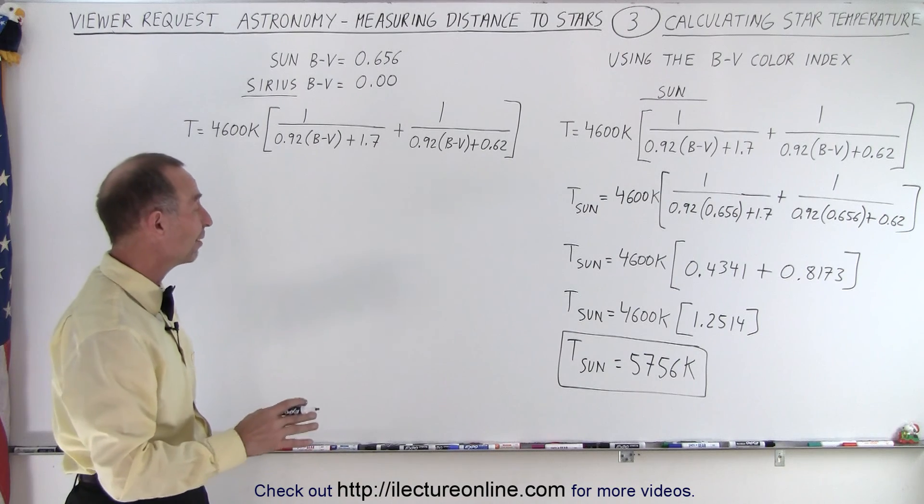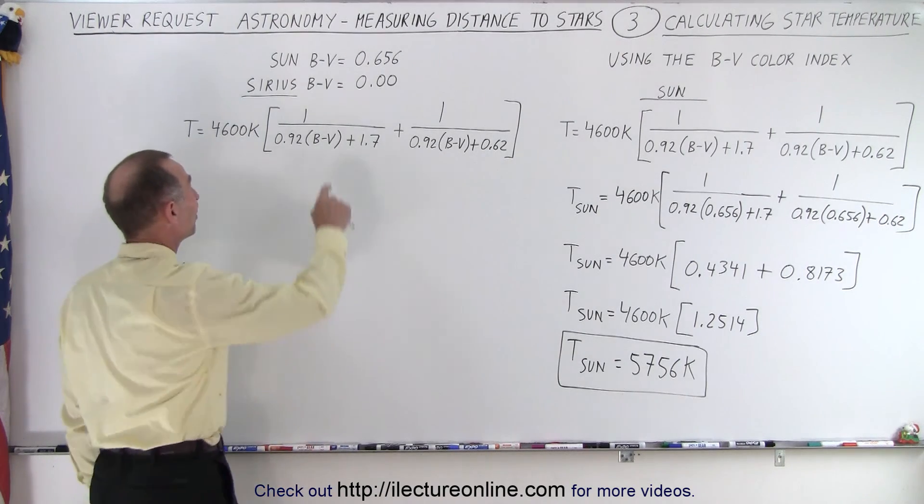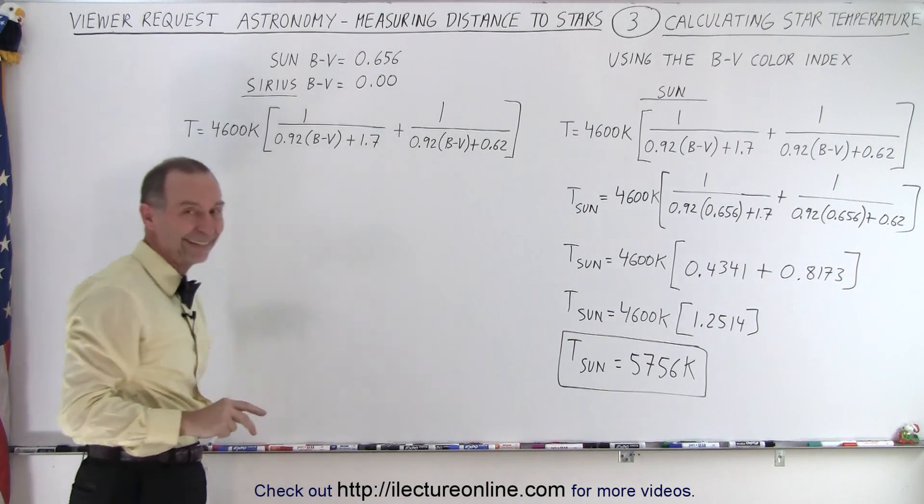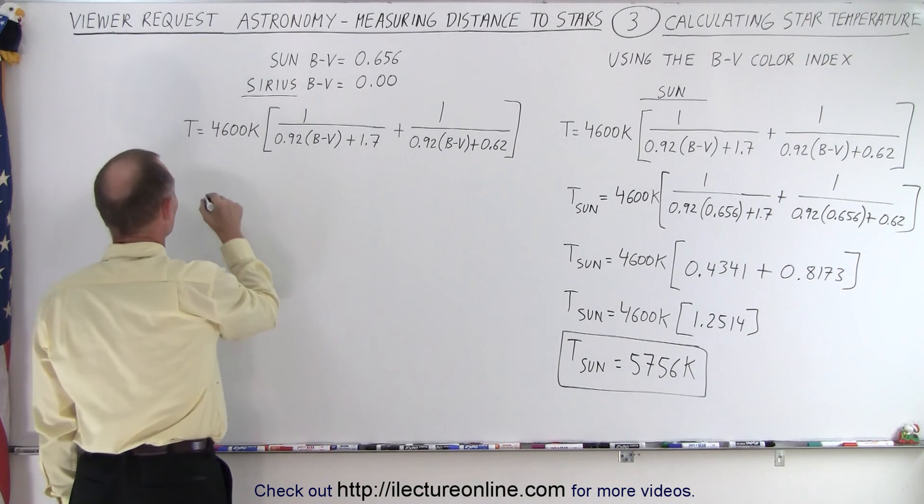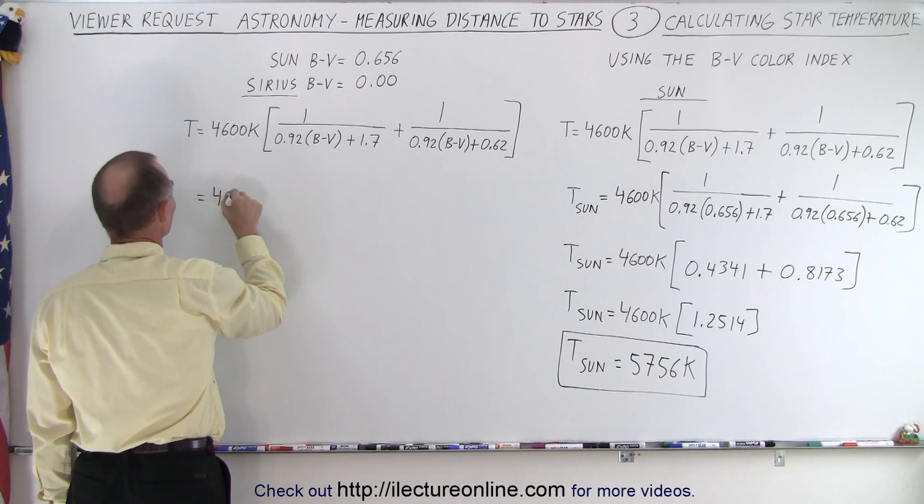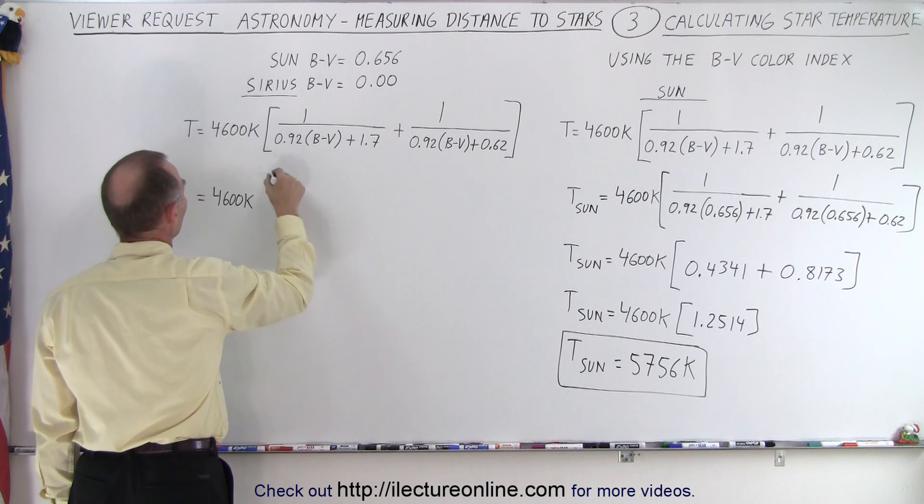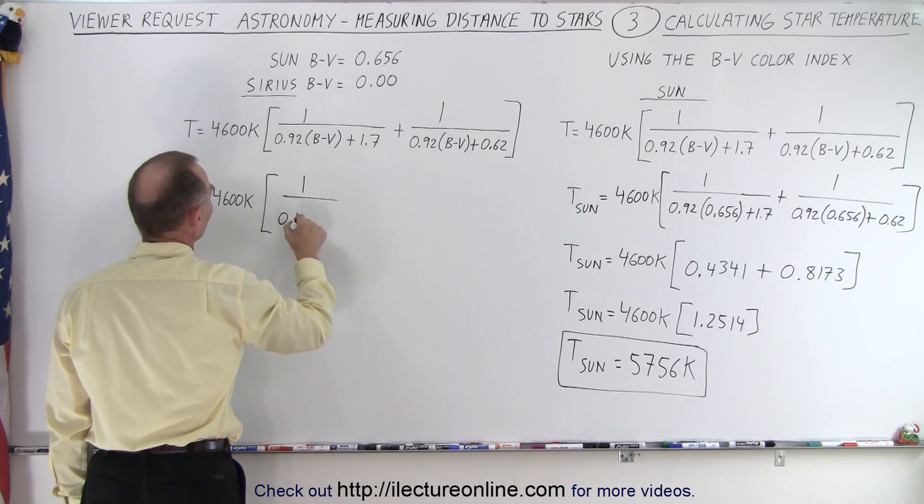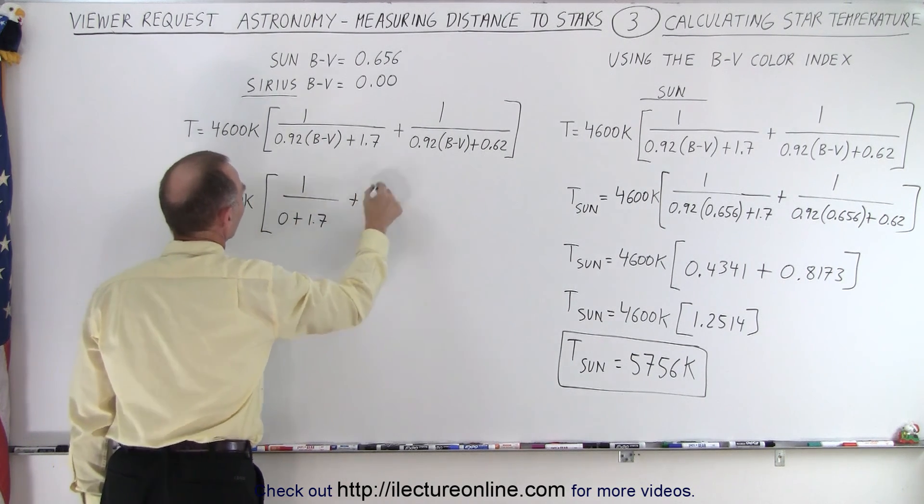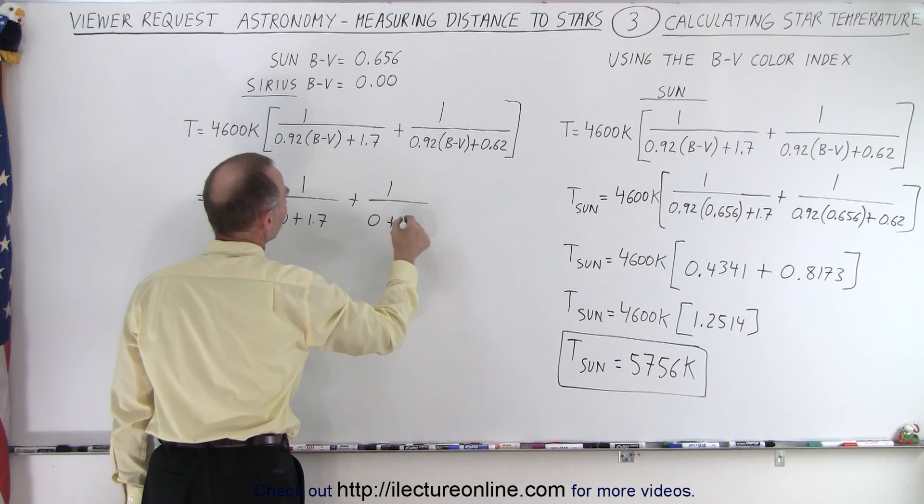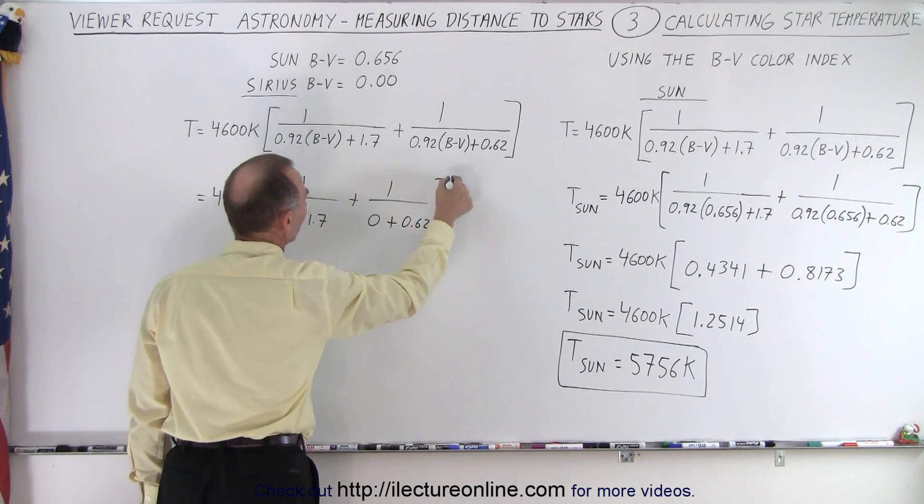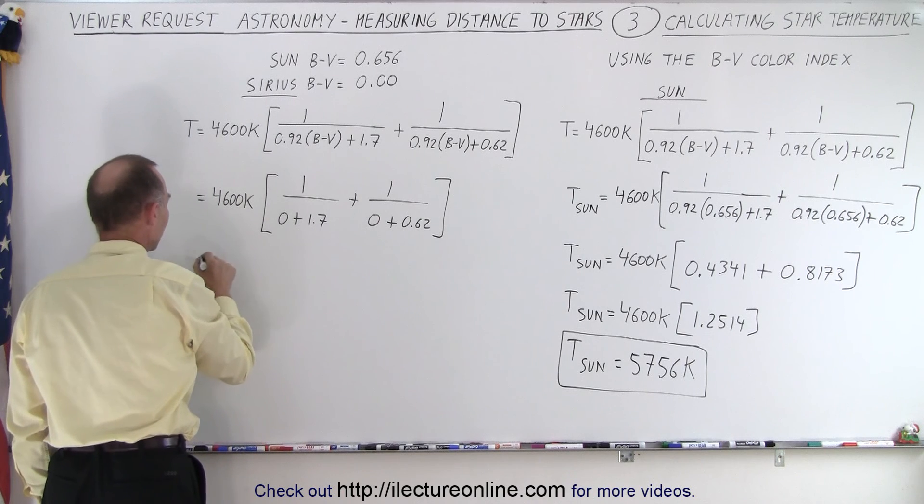Now let's do the same thing for Sirius, and notice since B minus V for Sirius is 0, it's actually a pretty easy calculation. So this is equal to 4600 Kelvin times 1 over 0 plus 1.7 plus 1 over 0 plus 0.62. So we'll do the same thing, we'll calculate them separately.